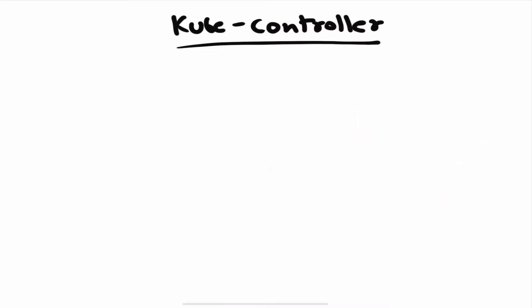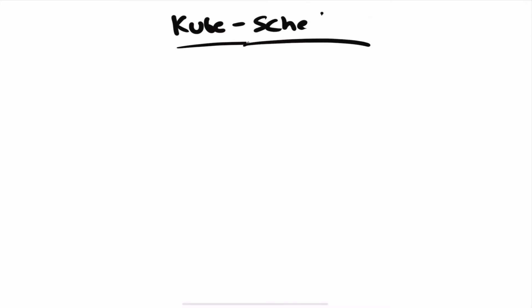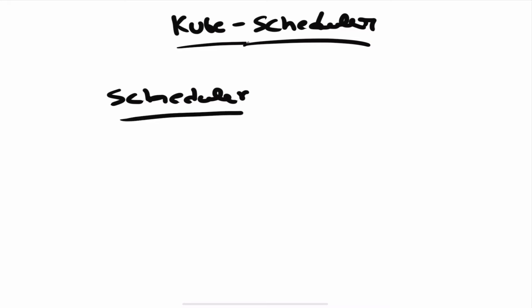Now let's talk about the scheduler. The scheduler is another component of the Kubernetes ecosystem. Whenever you create a Kubernetes object like a pod or a deployment, the scheduler goes and looks for the worker node that would be most apt to deploy that workload.